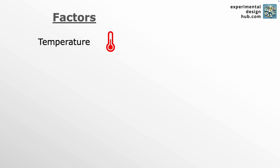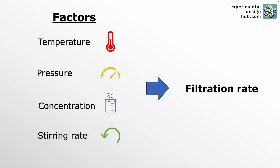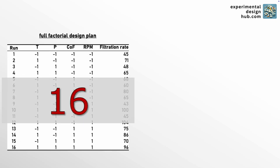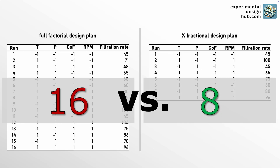This here is an experiment investigating how temperature, pressure, concentration and stirring rate affect the filtration rate of a chemical process. We compare a full factorial design with 16 experiments to a fractional design with just eight experiments to see what aliasing looks like and why it is not necessarily a problem.